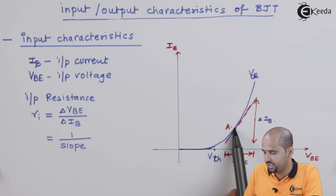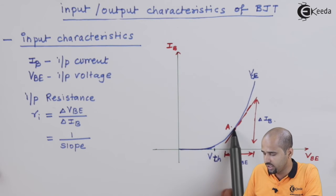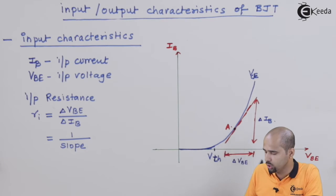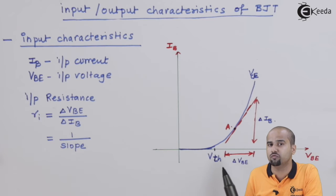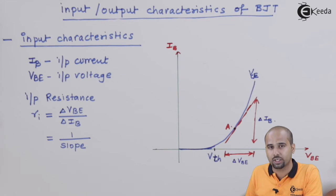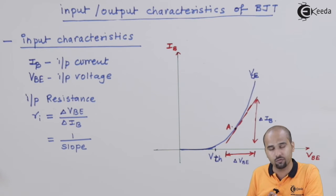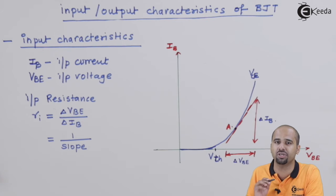Graphically, we get this input impedance as the inverse of the slope of the tangent drawn at point A, where the current value is Icq and the voltage is Vbq. We will learn about the Q-point later. For now, understand that input characteristics give an exponential nature of current. Now let us move to the output characteristics.